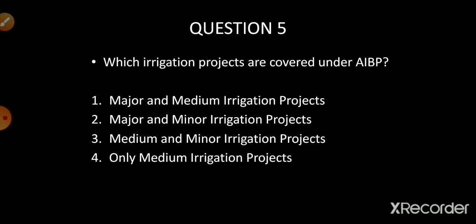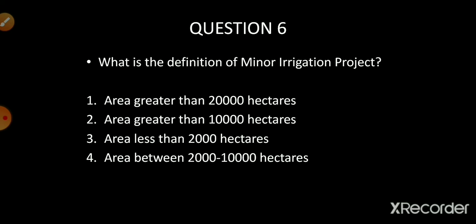Question number five: which irrigation projects are covered under AIBP? AIBP stands for Accelerated Irrigation Benefit Program. Options are major and medium irrigation projects, major and minor irrigation projects, medium and minor irrigation projects, or only medium irrigation projects. The correct answer is option number one: major and medium irrigation projects.